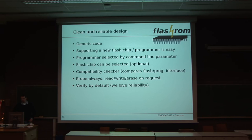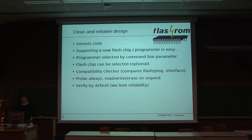The programmer is selected by a command line parameter. If you have a network card, a graphics card, and your mainboard, Flashrom can't know which one to flash — you should specify it, because Flashrom will by default say it doesn't know which one, so please tell it. It has a compatibility checker that verifies whether the flash chip and the programming interface are compatible — though it does not check whether the board and the image are compatible, because that would make cross-flashing impossible. Flashrom probes for the chip, but will never read, write, or erase unless you explicitly tell it. Flashrom verifies everything by default, two or three times at every step — it's all about reliability, because you won't be able to use a machine that won't boot.